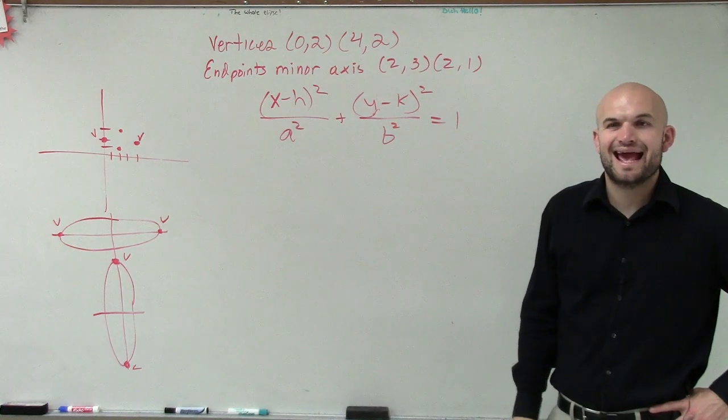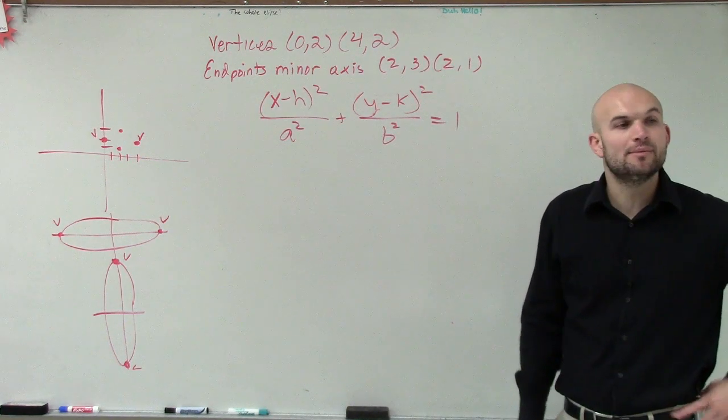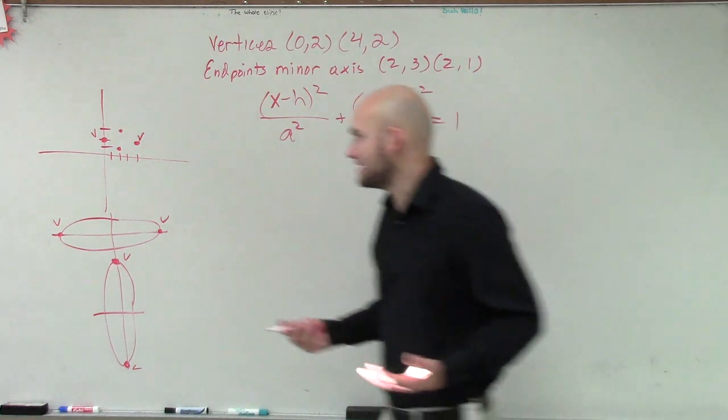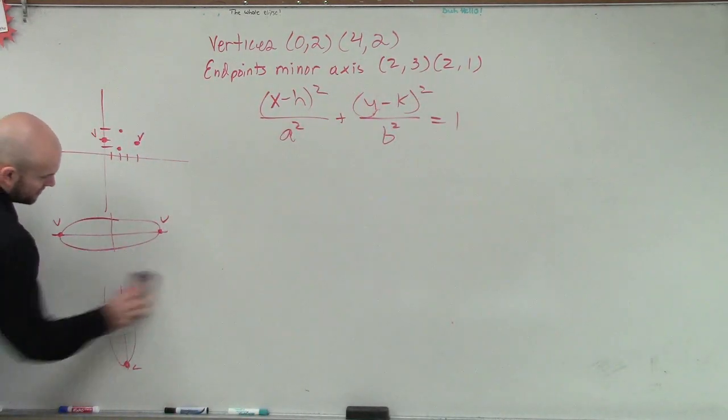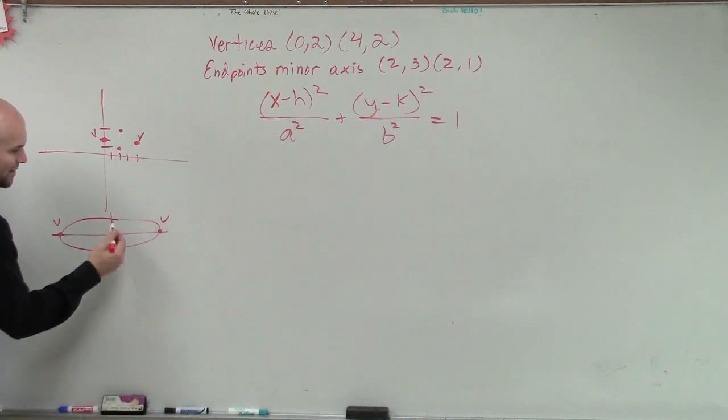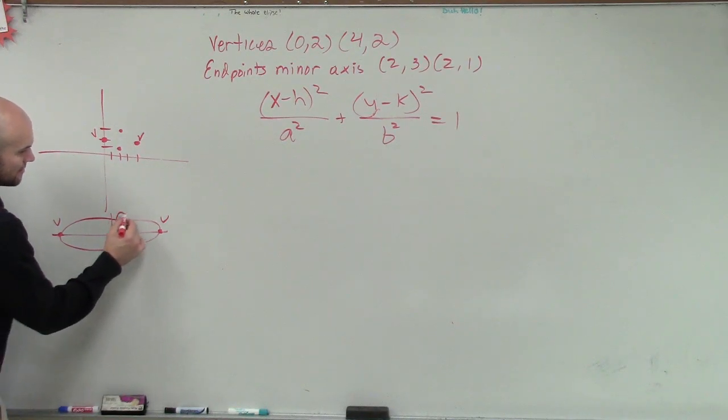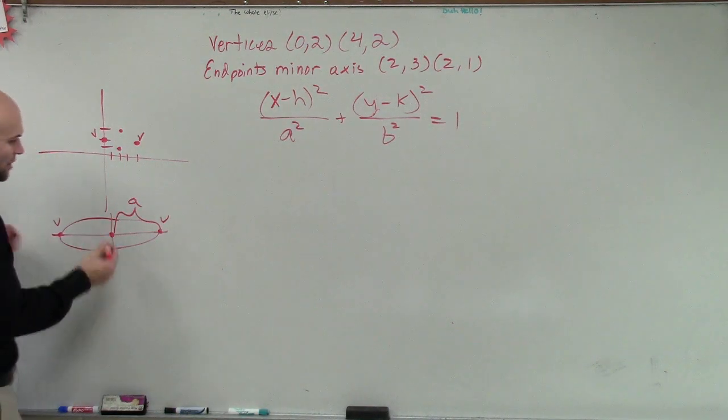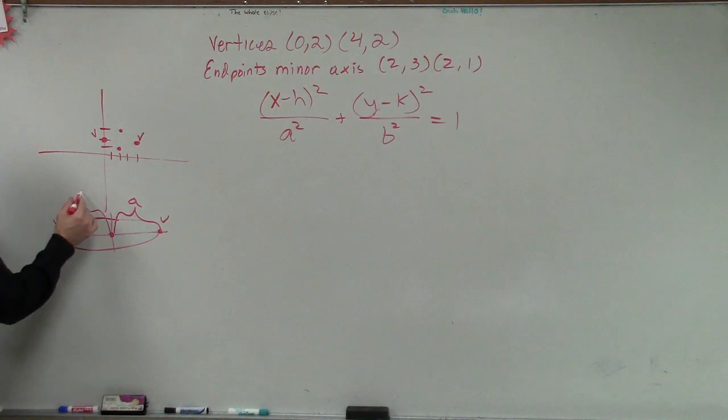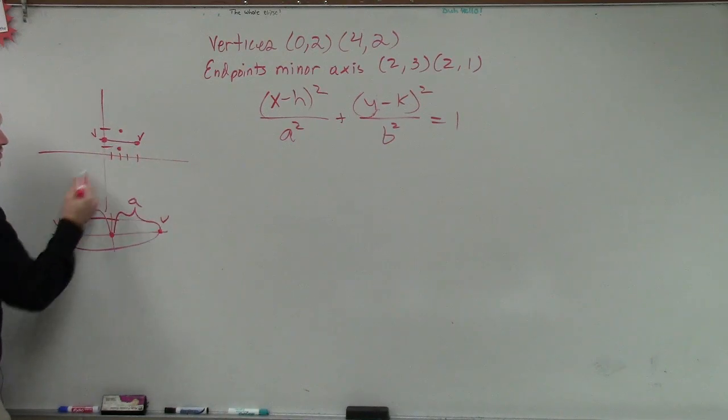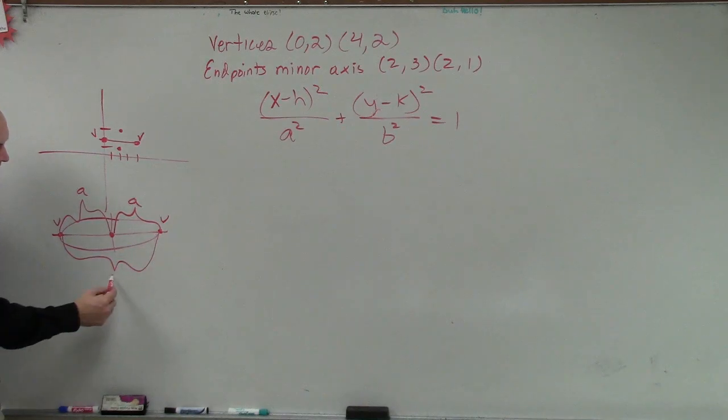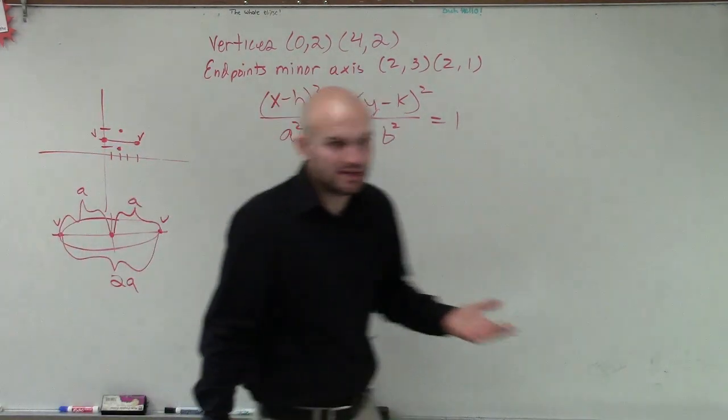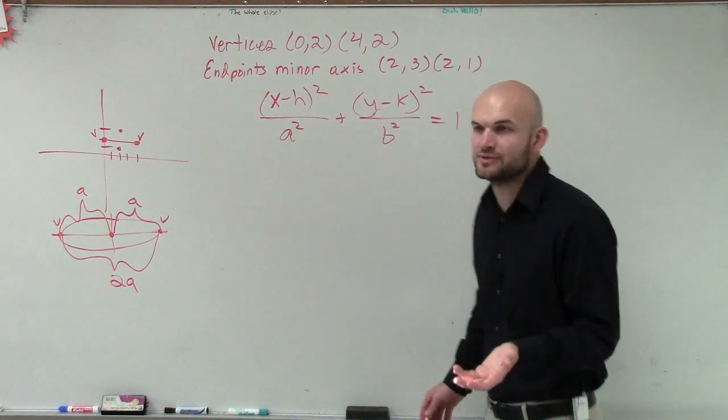So, do we know what a is, or at least what a squared is? Well, remember, a, ladies and gentlemen, is this distance. Since we're not dealing with the vertical, we can erase this. Oh. Remember, this distance from the center to the vertices, what we call a. And notice, this is also a. So, what is this distance, which is this total distance here? Because that total distance is going to be what? Two a. Two a. So, let's count. We can just simply just count. What is the distance between our two vertices?